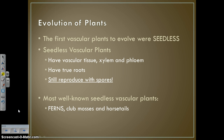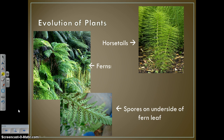Our first vascular plants to evolve were seedless — they had xylem and phloem and true roots, but they still reproduced with spores. The most well-known seedless vascular plants are ferns, but there are also club mosses and horsetails. If you take a fern leaf and flip it over, you can actually see these little spore sacks, and if you broke one open it would be filled with thousands of spores.